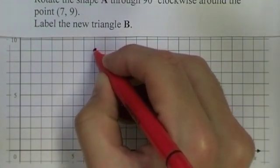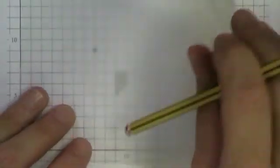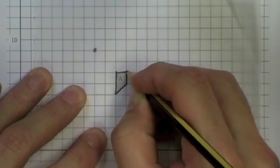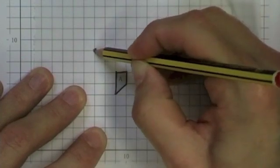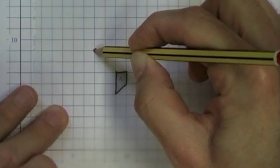So that is the center of rotation. Now I get my tracing paper, draw around the shape. Hold my pencil firmly at the center of rotation. I have to be accurate there or the image shape will be in the wrong place.